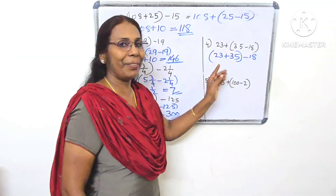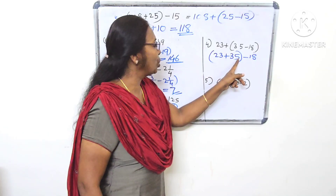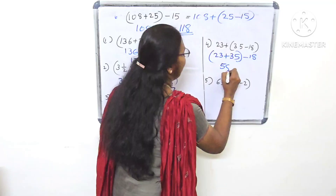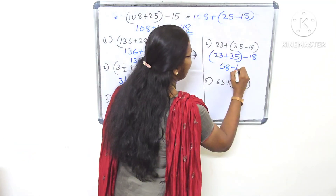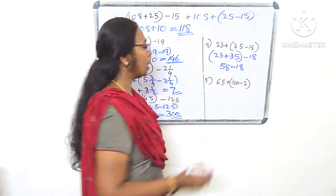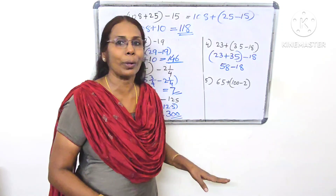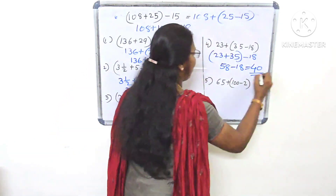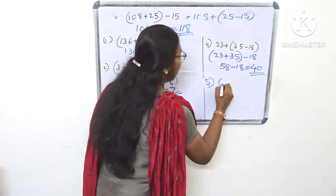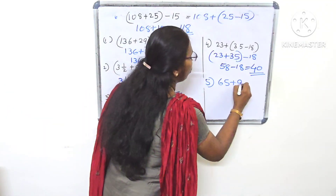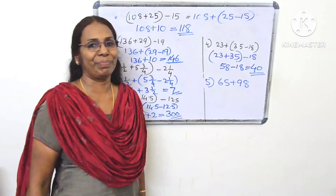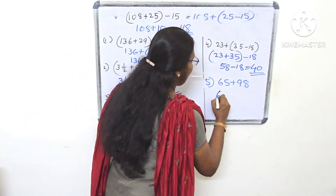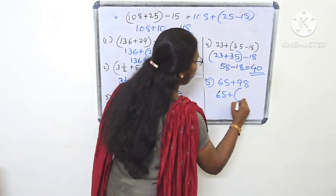Let's take a look here: 23, 5, 28. Then 28, 30, 58. Then 58, 48. Working through these numbers: 48, 68.